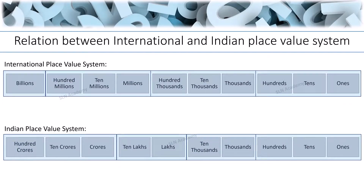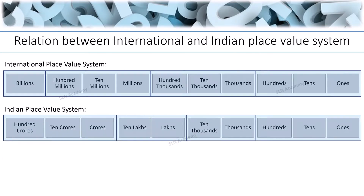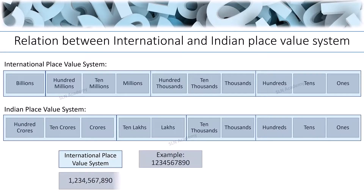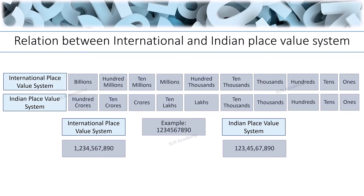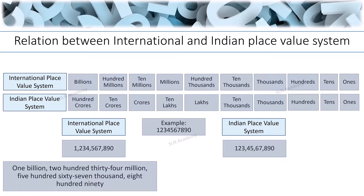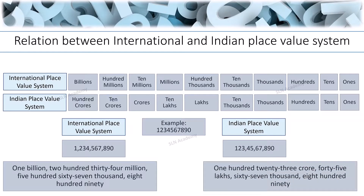Let us observe these place value systems closely and compare them with each other. Here I have a 10-digit number: 1234567890. In the international place value system, we read and write this number as 1,234,567,890. In the Indian place value system, we read and write this number as 1,23,45,67,890.